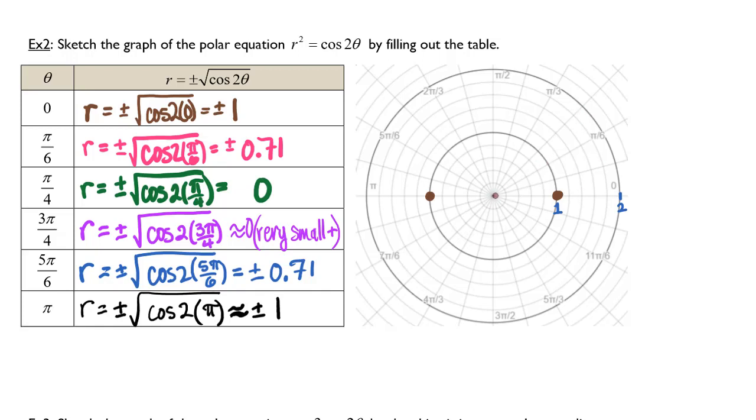At pi over 6, I'm at 0.7 and negative 0.7.